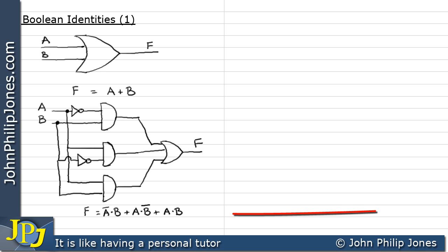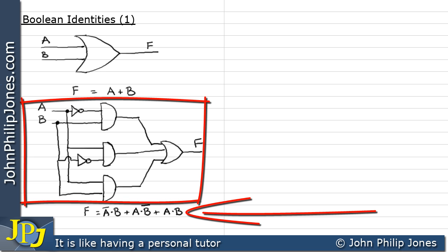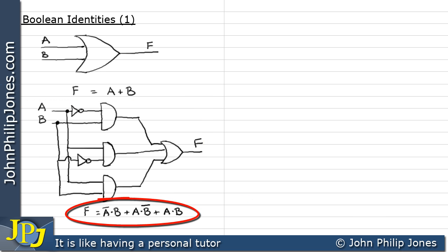So, for example, this Boolean expression here represents this particular combinational logic circuit. So, if I can minimize this to something simpler, I can then derive the logic circuit from that simplified Boolean expression. So, let's have a look at how we can minimize this particular Boolean expression.